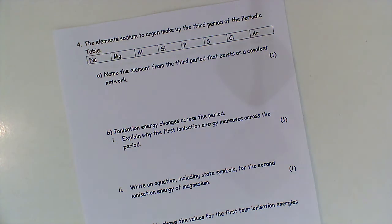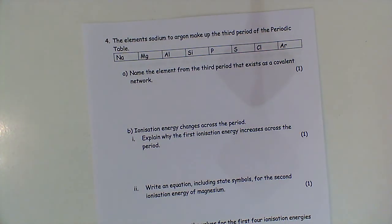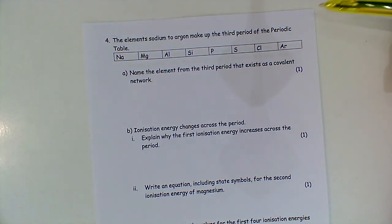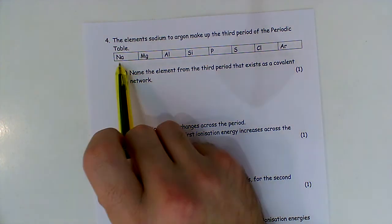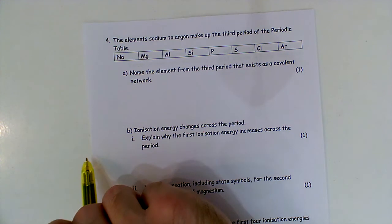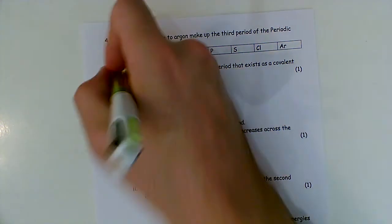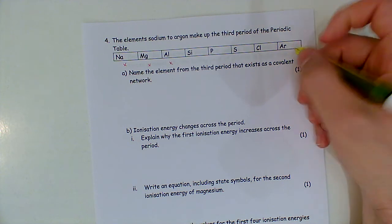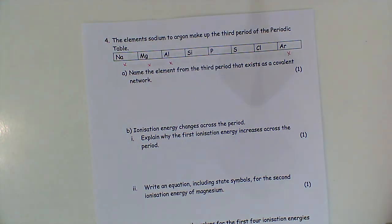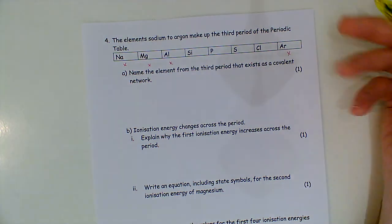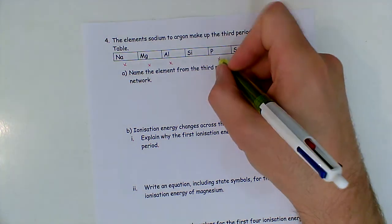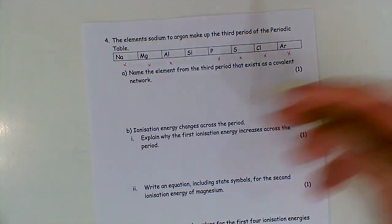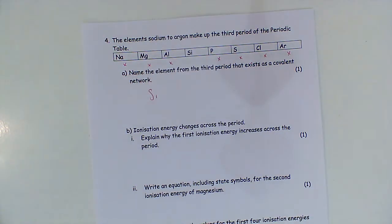Next question: we've been given sodium to argon — period three of the periodic table. Name the element that exists as a covalent network. Sodium, magnesium, aluminium are metals — definitely not those. Argon is a noble gas, so it's monoatomic. Phosphorus, sulfur, and chlorine are all molecules: P₄, S₈, and Cl₂. So that leaves us silicon — you can just write the symbol Si.